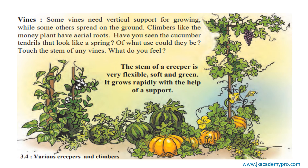Climbers like the money plant have aerial roots. As they climb, the roots grow from the stems and take support. Have you seen the cucumber tendrils that look like a spring? Cucumber plants and other similar plants give out small spring-like structures called tendrils. These tendrils move in the direction of some support, wind around it, and that is how the plant gets support, since the stems of these plants are very soft and can bear very little weight on their own. So they spread out to find support, and such climbers have these tendrils.